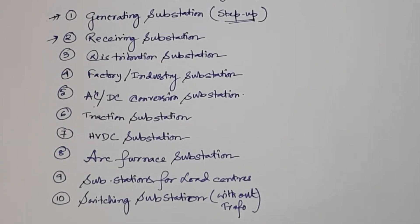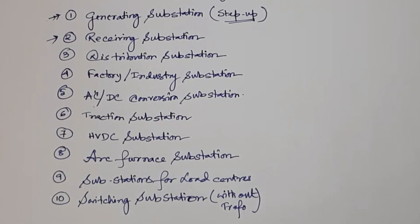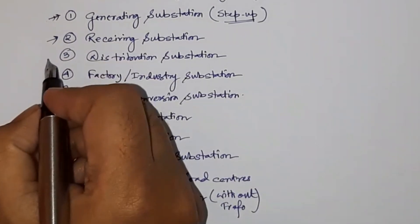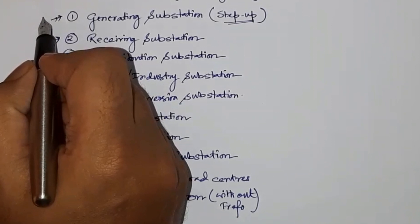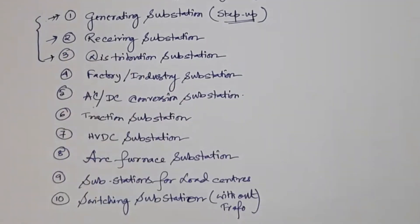Then there is the receiving substation. This could be a receiving substation of a power transmission system, or it can be the receiving substation of an industrial plant. If an industrial plant is taking power from a supply authority or grid, there will be a main receiving substation, also called MRS.